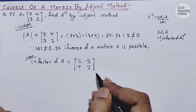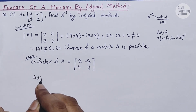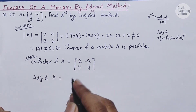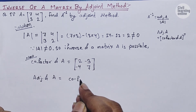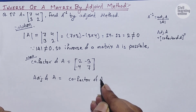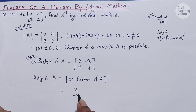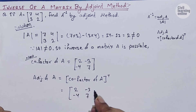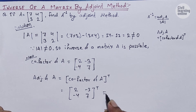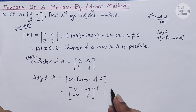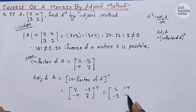This gives us the cofactor matrix of A. The adjoint of A is the transpose of the cofactor matrix. To find the transpose we interchange rows with columns: the first row becomes the first column. So the adjoint of A is [2, -3; -4, 7].